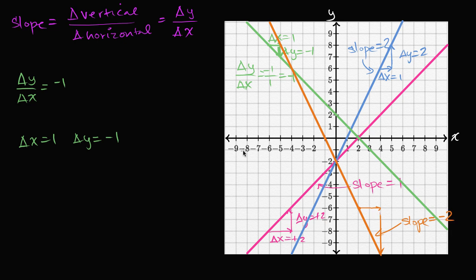Hopefully this gives you a little more intuition for what slope represents and how the number we use to represent slope lets you visualize how steep a line is. A very high positive slope means as x increases, y is going to increase fairly dramatically. If you have a negative slope, as x increases, y actually decreases. The higher the slope, the more you increase as x increases; the more negative the slope, the more you decrease as x increases.